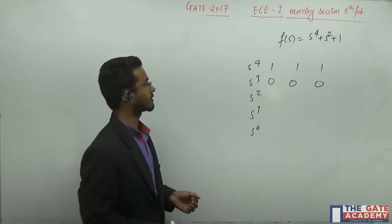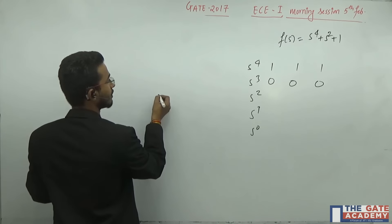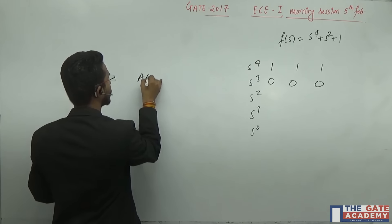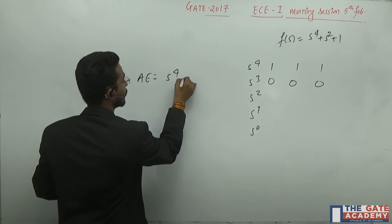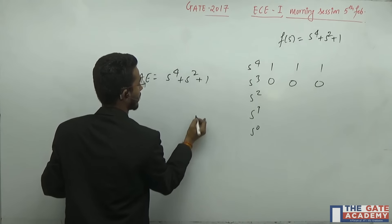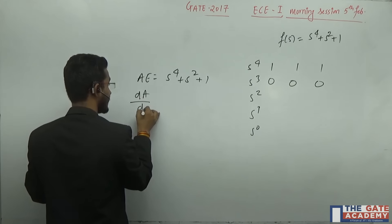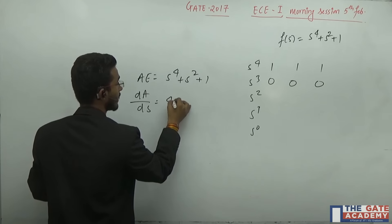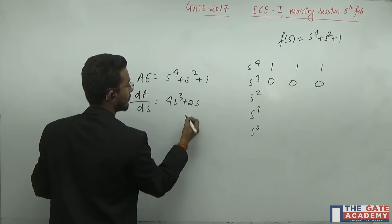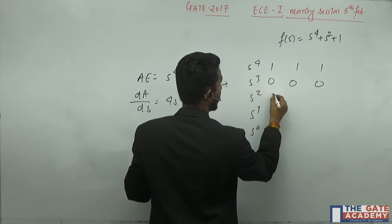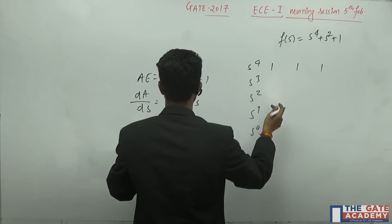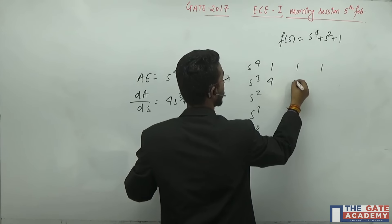How to do this? Firstly, form the auxiliary equation and you will get the auxiliary equation like s raised to 4 plus s square plus 1. Then dA divided by dS, differentiate this: 4s cubed plus 2s. We will get our new coefficients which are 4 and 2.